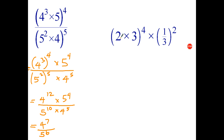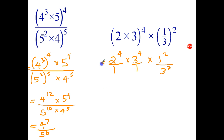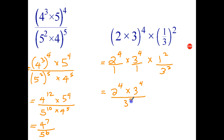For the last one, I expand the brackets: that gives me 2 to the power of 4 times 3 to the power of 4, then write the second part without brackets as 1 to the power of 2 over 3 to the power of 2. To multiply fractions, multiply the numerators — 1 squared is just 1, so I leave that out — and in the denominator, 1 times 1 times 3 squared is 3 squared. Simplifying: I have 2 to the 4th, and 3 to the 4th divided by 3 squared. To divide powers with the same base, subtract indices: that's 3 to the 4 minus 2. So the final answer is 2 to the 4th times 3 squared.